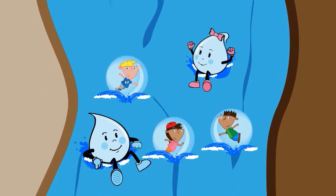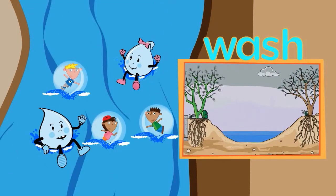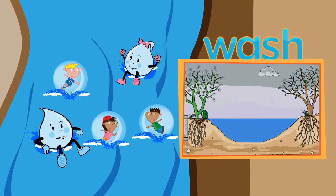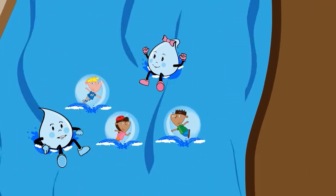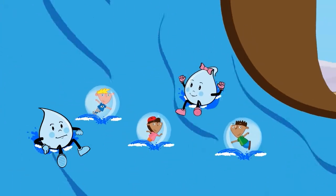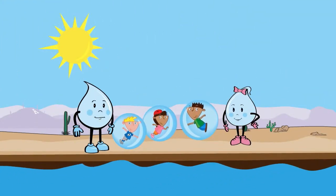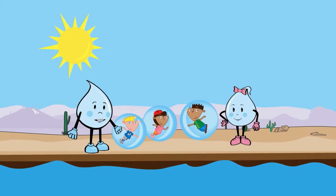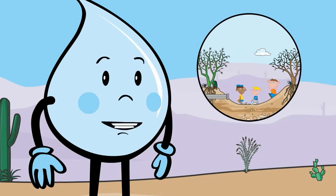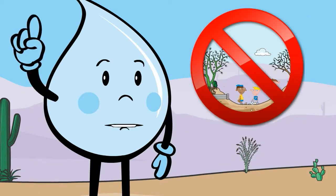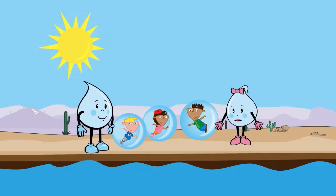Is this a river? This is a wash — a wash is a dry creek that temporarily fills with water during a storm. When water flows across the earth's surface it's called runoff. Right after a storm, runoff can quickly fill up a wash — we call this a flash flood. Flash floods can be dangerous, so remember kids: never play near or in a wash during a storm.